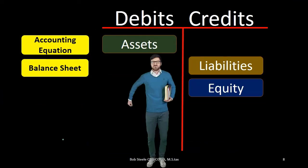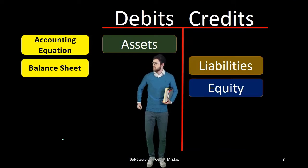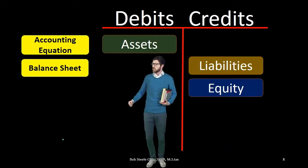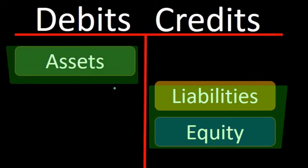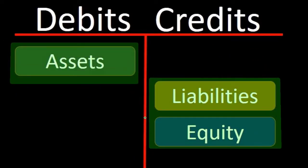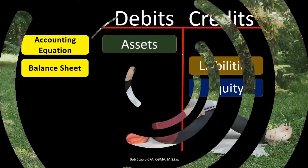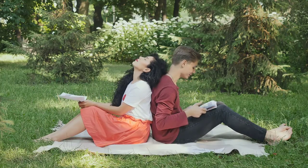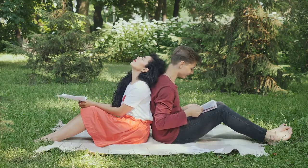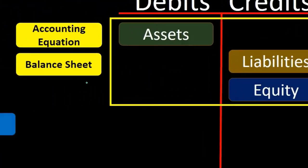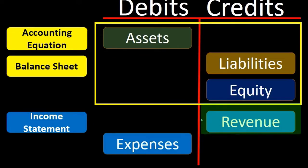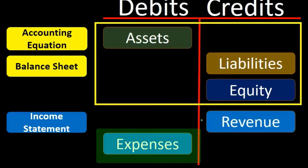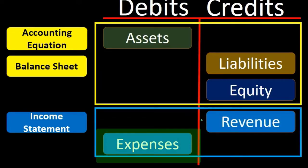Let's review the normal balances again — you need to memorize or have this cheat sheet. Assets on the left, liabilities on the right, equity on the right of our T account. That is the accounting equation, that is the balance sheet. Then we add the income statement: revenue on the credit side and expenses on the debit side.